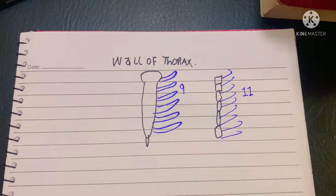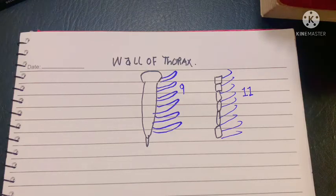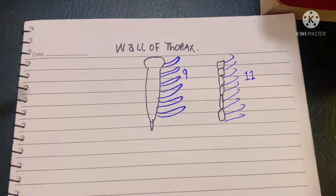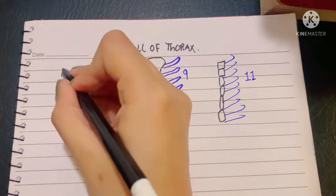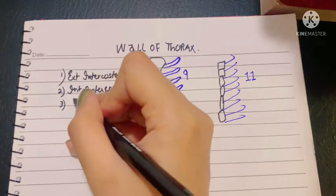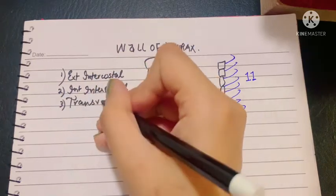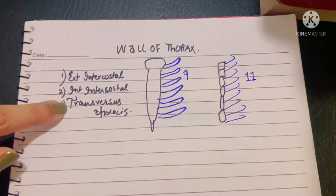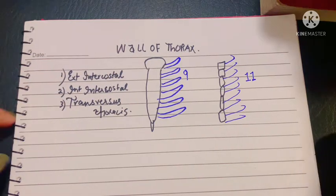These muscles are also covering the thorax. However, when we talk about the thoracic wall proper — which is solely the muscles of the thorax that are only involved in carrying out actions for breathing — those are the muscles we will be studying today. There are about three of these muscles: the external intercostal, internal intercostal, and finally the transversus thoracis muscle. Today we will be studying their origins, insertions, and some more important facts related to them.